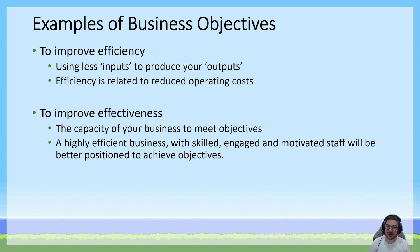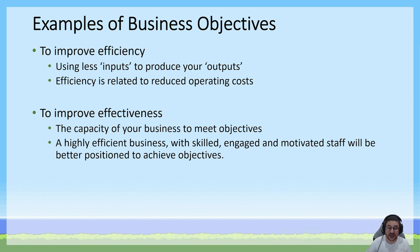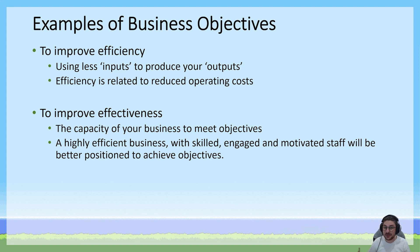Using excess inputs is costly, so improving efficiency is a common business objective. Effectiveness is defined as the degree to which a business can achieve its objectives. An effective business is well positioned to consistently make a profit and implement strategies to increase market share; a less effective business struggles to meet these objectives at all. A highly efficient business with skilled, engaged, and motivated staff will be better positioned to achieve its objectives, as engaged staff are more productive — and you'd see that reflected in objective achievement.